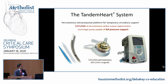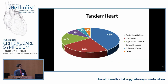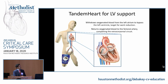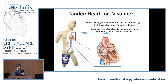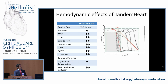The next pump is the TandemHeart, a percutaneous extracorporeal platform used mostly in acute heart failure, complex PCI, and right heart support. Placement requires more technical skill because it is transseptal: the cannula is inserted through the right femoral vein, advanced into the right atrium, and then crossed transeptally to sit in the left atrium. This allows it to take oxygenated blood from the left atrium, pass it through the pump, and deliver it into the left femoral artery.